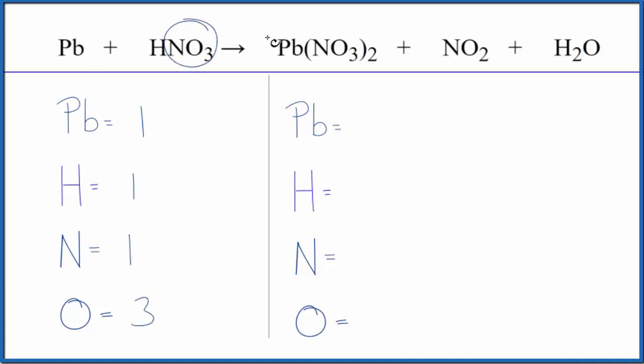Normally, if I have a polyatomic ion that's the same on both sides, I don't split it up. But this nitrogen out here, that complicates things. So I'm going to split these all up here.